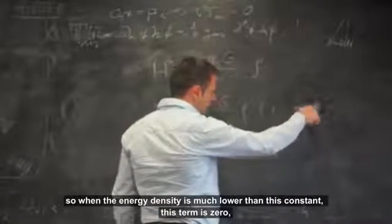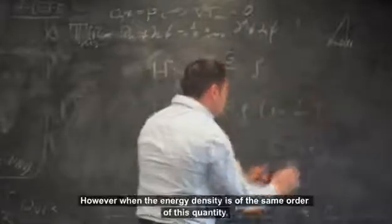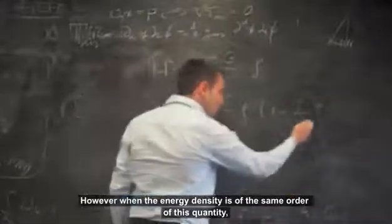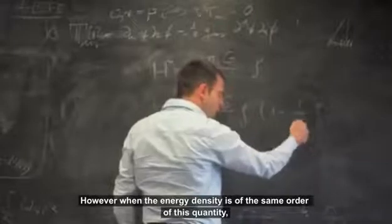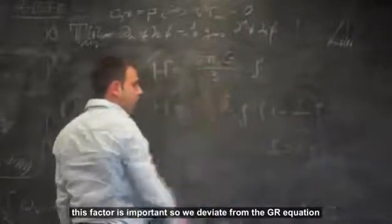This term is zero, so we recover the same equation. However, when the energy density is of the same order as this quantity, this factor is important, so we deviate from the GR equation.